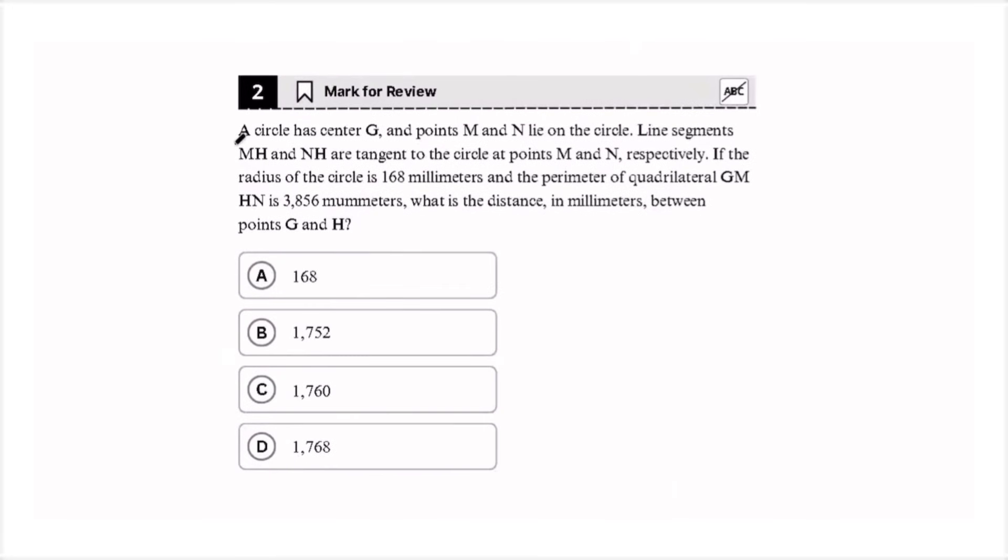A circle has center g, and points m and n lie on the circle. Line segments mh and nh are tangent to the circle at points m and n, respectively. If the radius of the circle is 168 millimeters, and the perimeter of the quadrilateral gm and hn is 3856 millimeters, what is the distance in millimeters between points g and h? So first, let's draw the circle, with the center g. And we can label our points m and n, which lie on the outside of the circle. And then let's draw the lines that connect them to the center g. And then we can draw the tangent lines that intersect at point h.